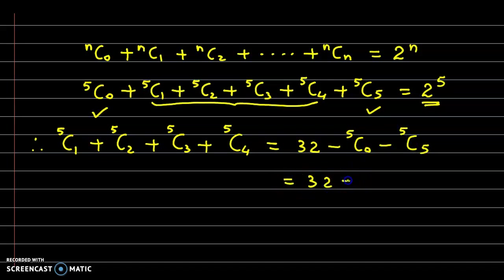That is 32 minus 5C0. nC0 is 1. 5C5, that is nCn, this is also equal to 1. So 32 minus 2.